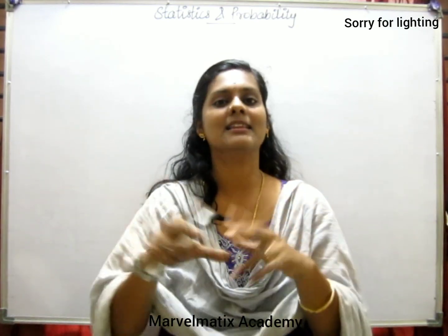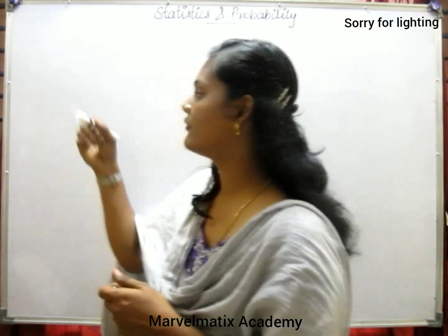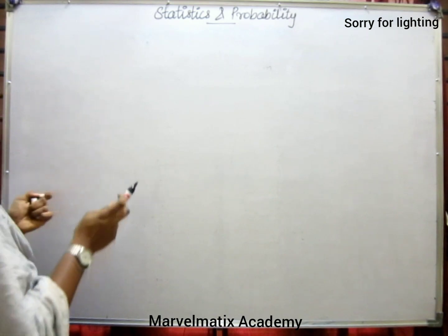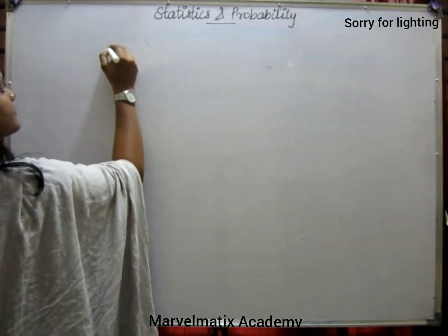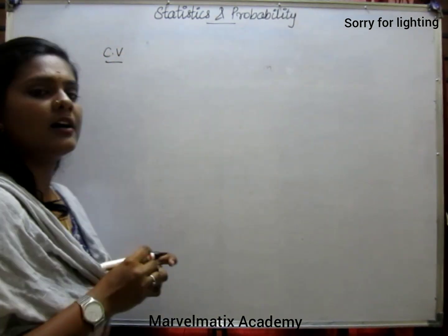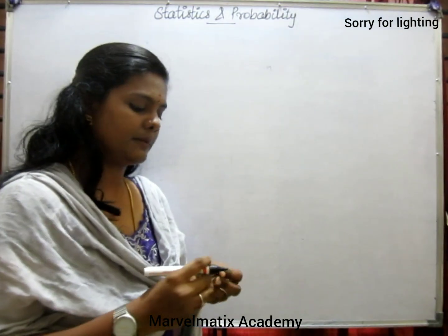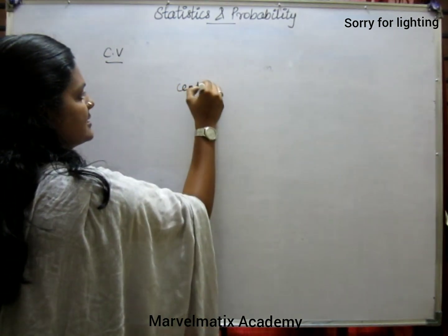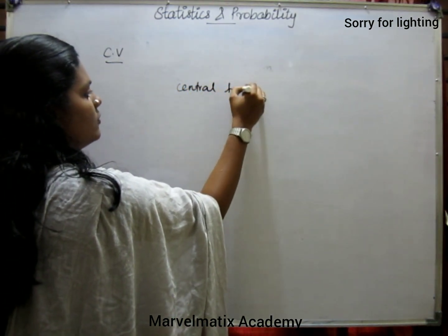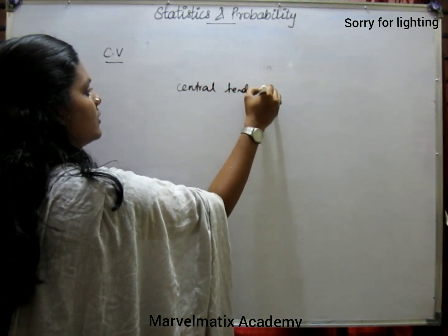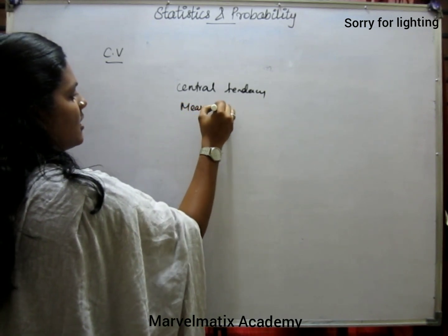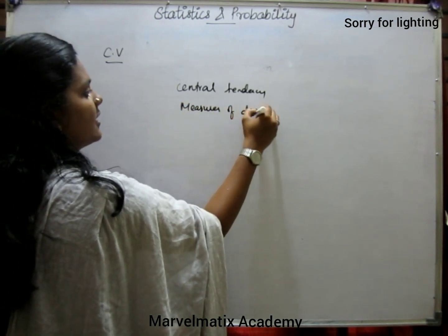So, that's when we ask questions and that's the answer. Now, the coefficient of variation — let's look at where it comes from. Let's look at the central tendency and the measures of dispersion.